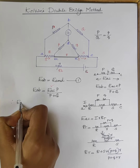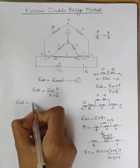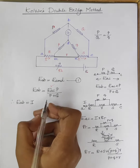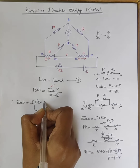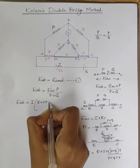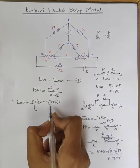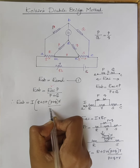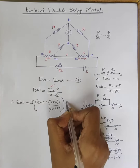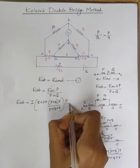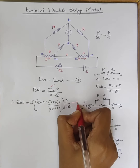Therefore, EAB = EAC × P / (P + Q), which gives EAB = I × [R + S + (P + Q) × r / (P + Q + r)] × P / (P + Q). This is equation number 2.